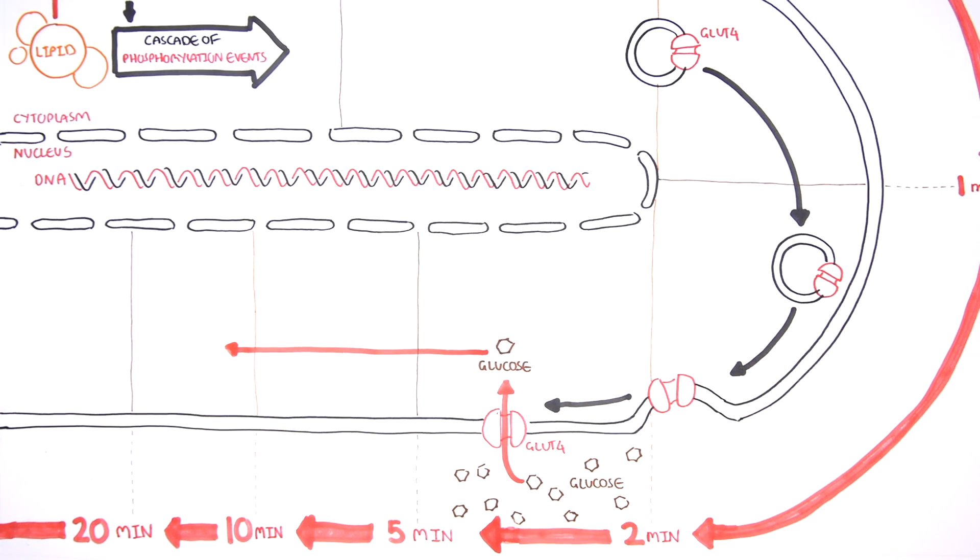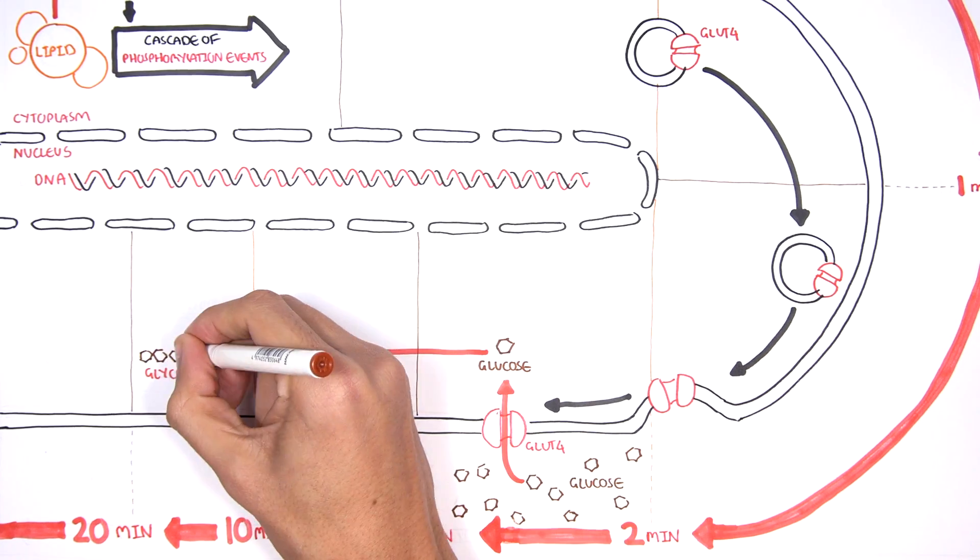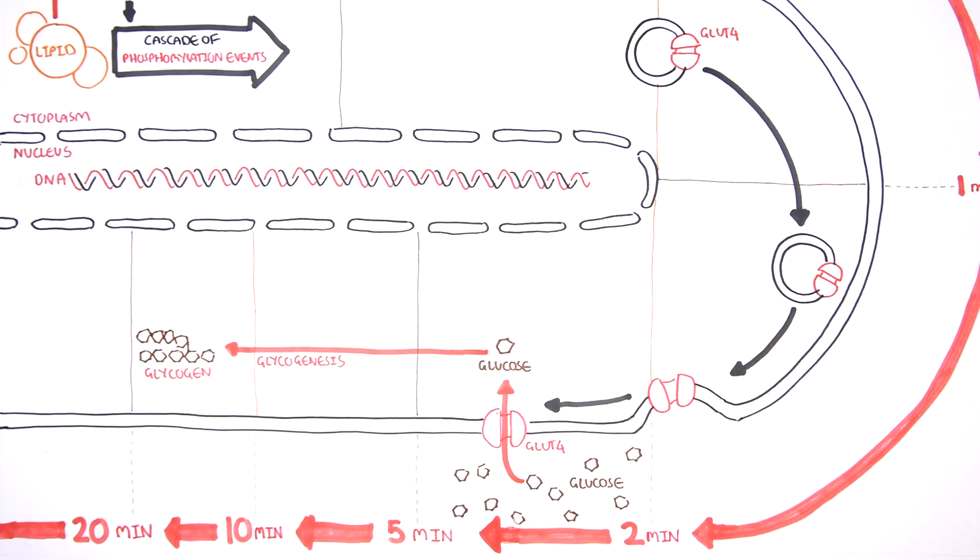By 20 minutes, the cascade of phosphorylation events stimulates glucose storage. This is done by storing glucose as glycogen through glycogenesis.